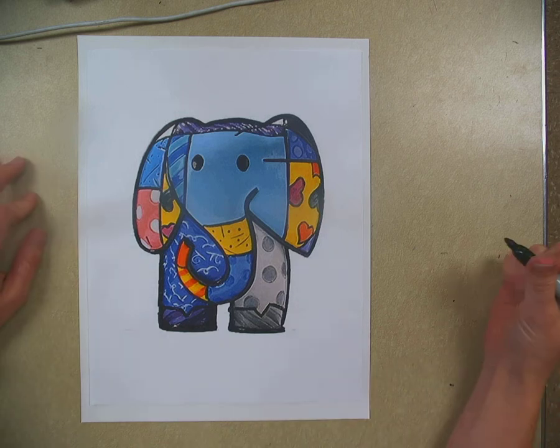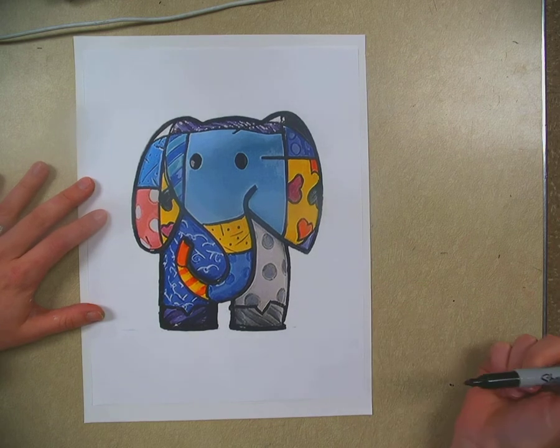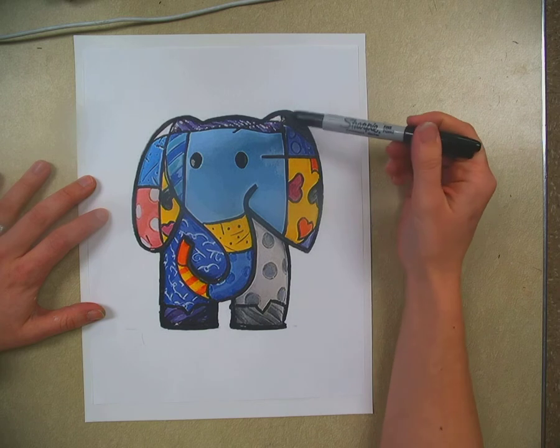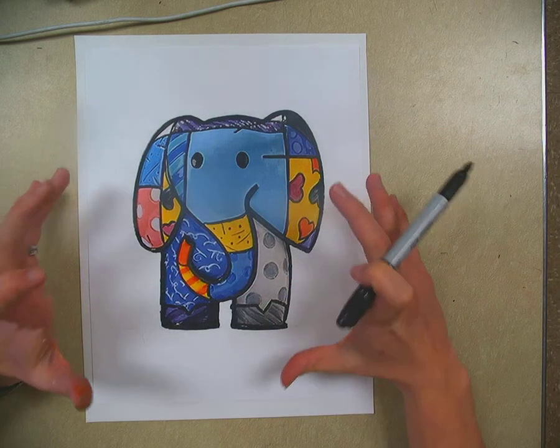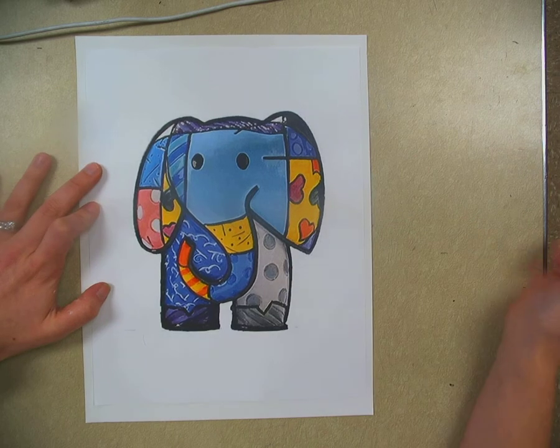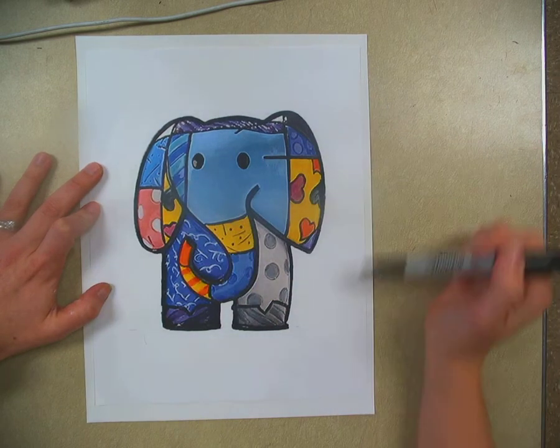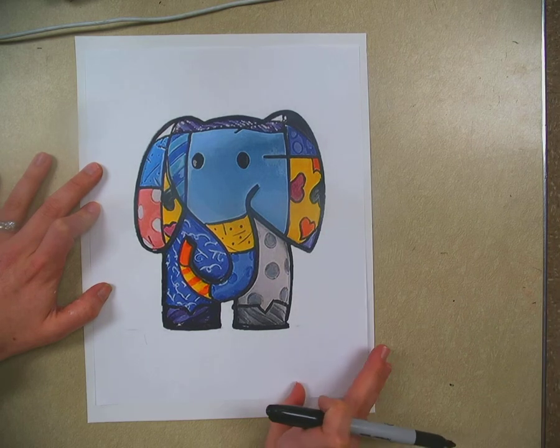All right guys, today we're going to draw the Romero Britto style elephant. Romero Britto is a Spanish artist who is known for his crazy colors and patterns that are all over normal things. We're going to draw this elephant today and add a little bit of detail in the background that's not surrounding this elephant. Here's an idea of what your elephant is going to look like.